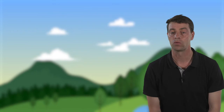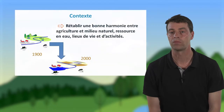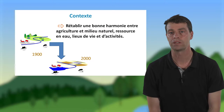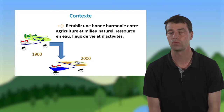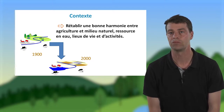Dans le contexte, nous avons une agriculture qui a fortement évolué entre le début du XXe siècle, qui était plutôt basée sur une agriculture vivrière, jusqu'à la fin du XXe siècle, où les objectifs de rendement agricole et de productivité étaient des objectifs politiques avérés.